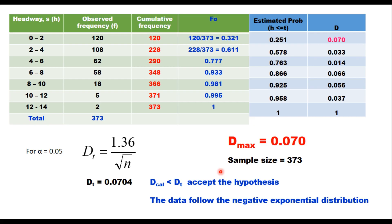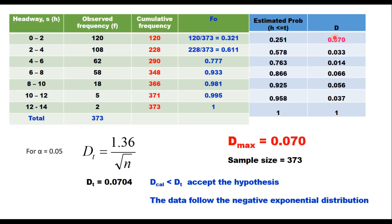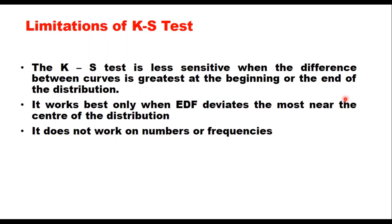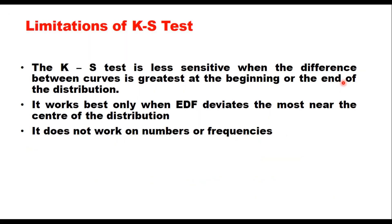That is how we use the KS test. A few points on its limitations: the KS test is less sensitive when the difference between curves is greatest at the beginning or end of the distribution — in that case, the chi-square test is better. It works best when the estimated distribution function deviates most near the center of the distribution. Also, it does not work directly on numbers or frequencies — you must convert them into a cumulative distribution function varying from 0 to 1, so it always works in ratios.